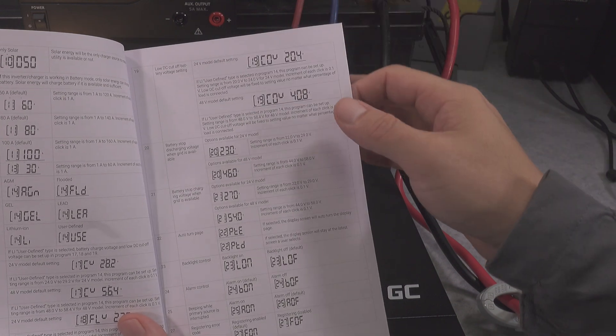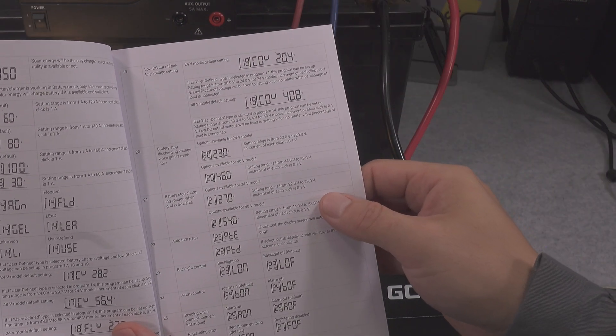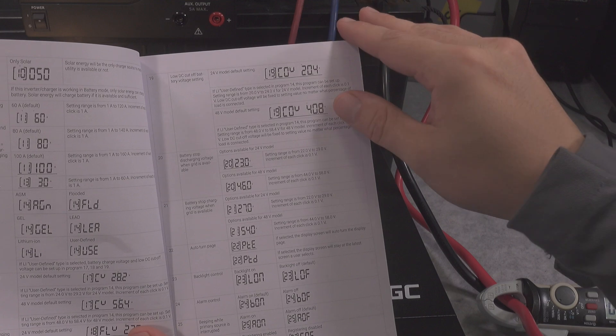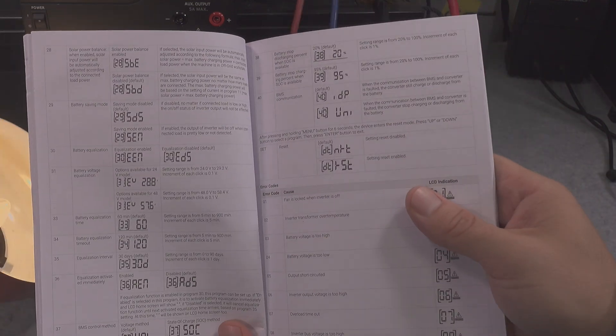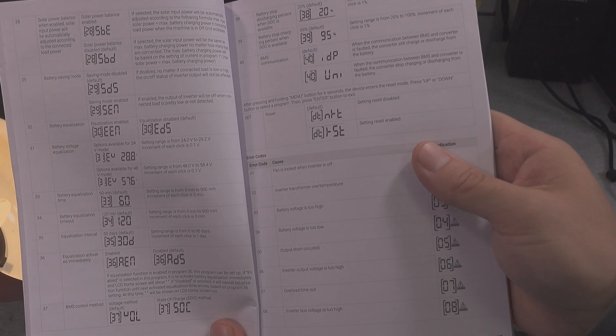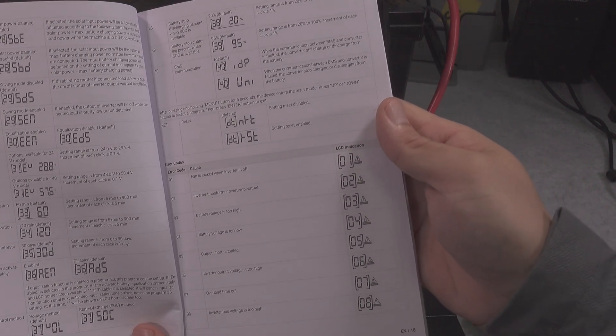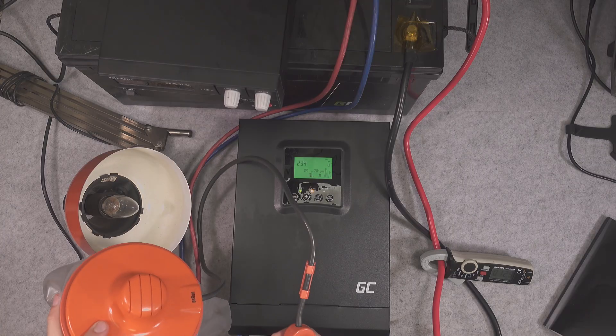You can go with different options if you've got an AGM or a lead acid battery. You can recharge them when the sun is missing so they are not going to sulfate, and you can walk through that manual. Absolutely beautiful.